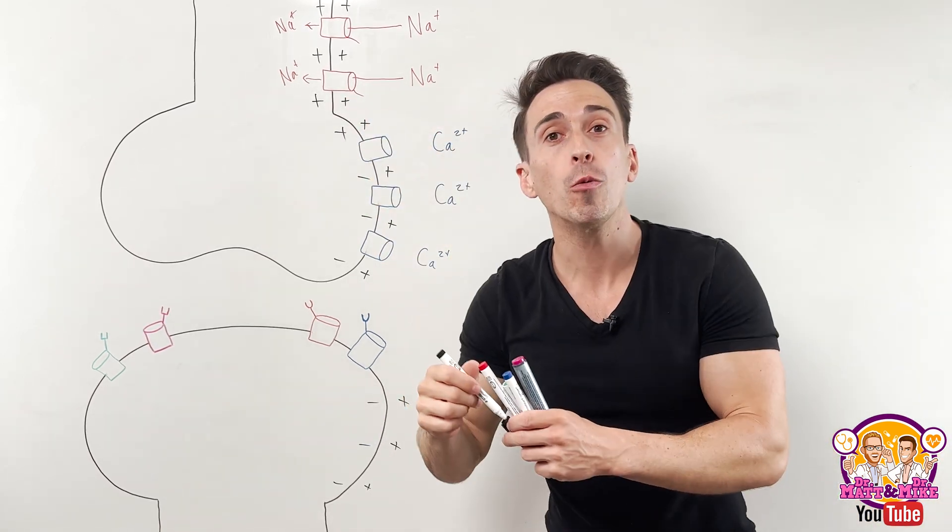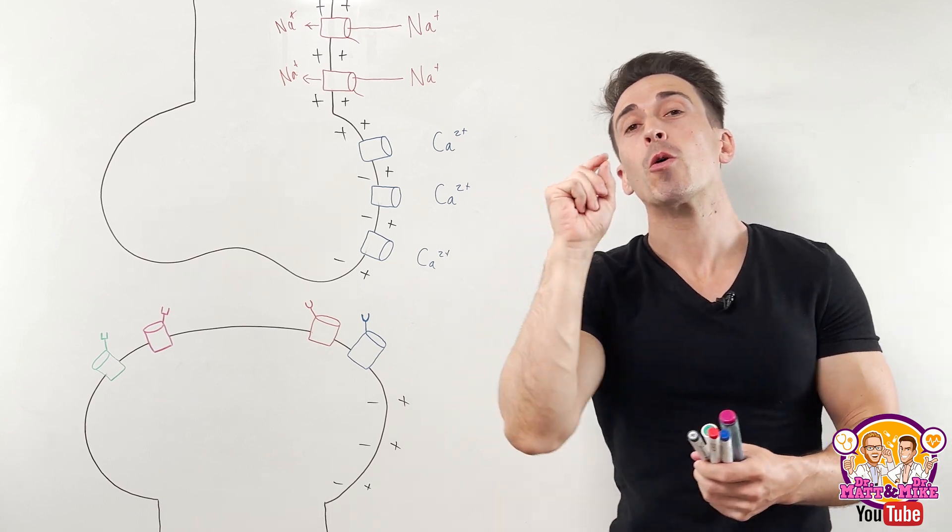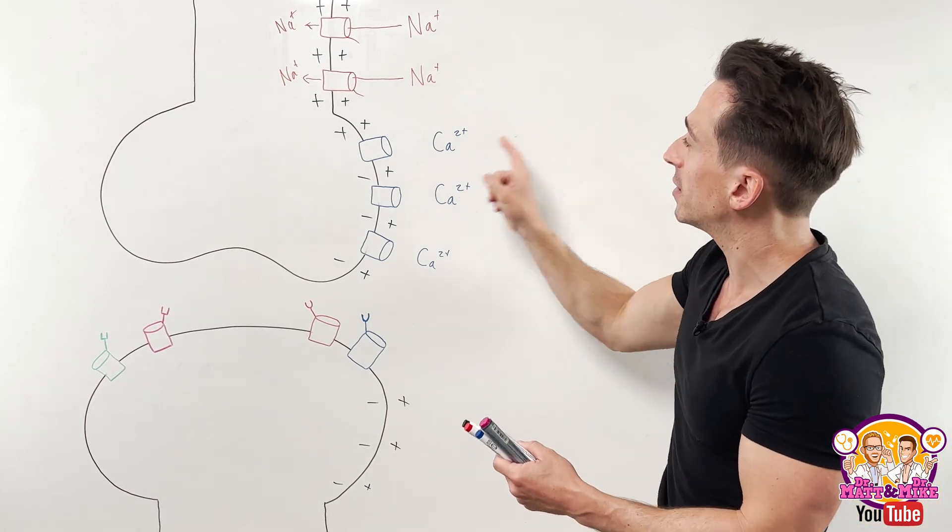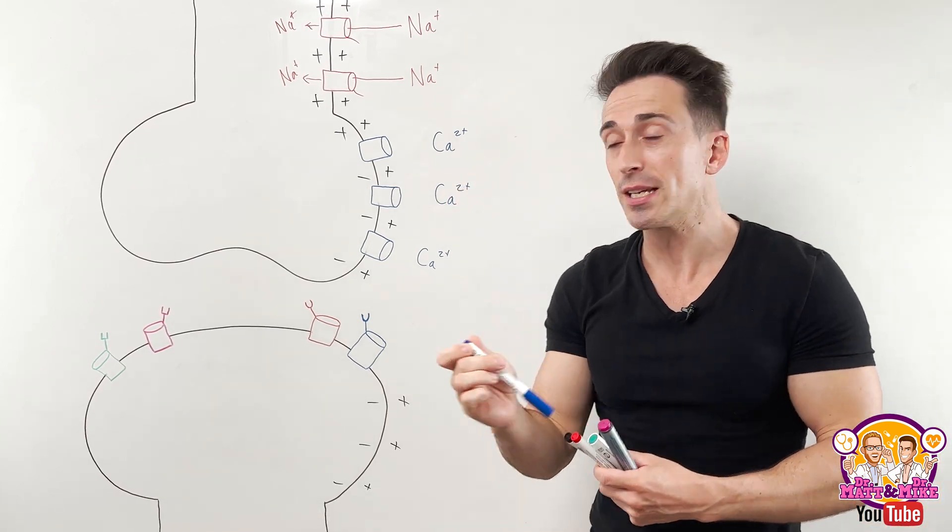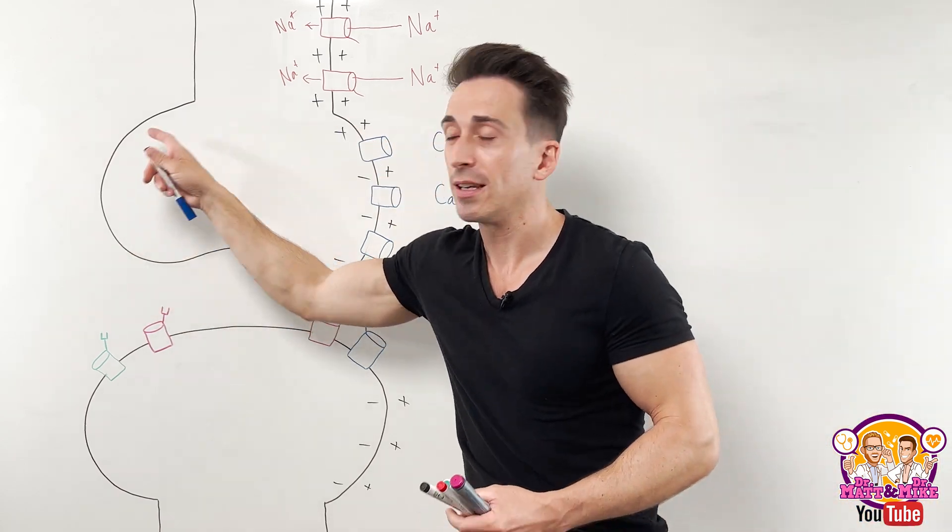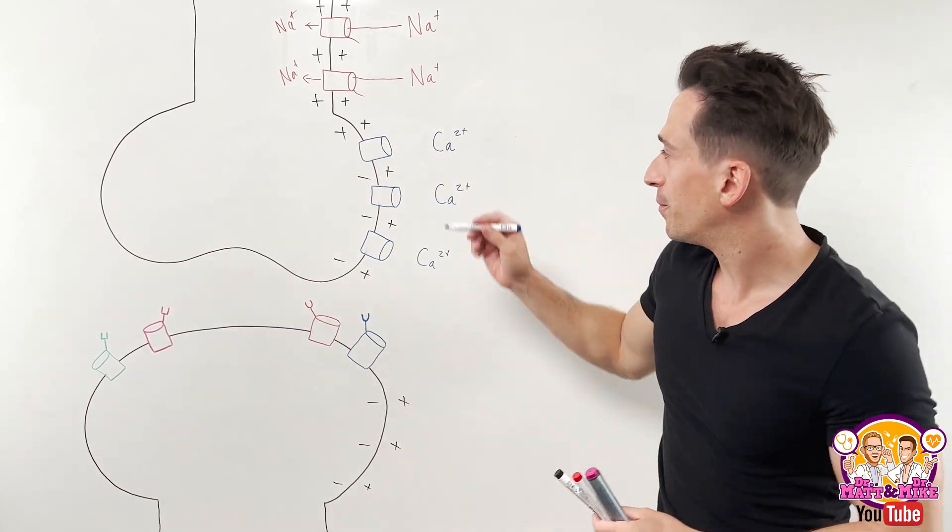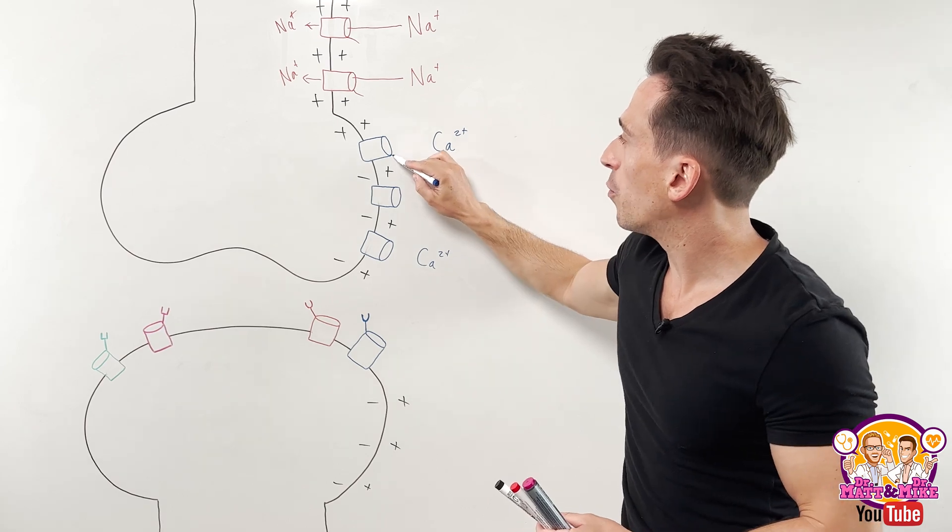And it's made this particular area slightly positive. Now we no longer are opening voltage gated sodium channels. We now start to open voltage gated calcium channels. This is once we've hit the terminal, the calcium channel opens, flips its lid.